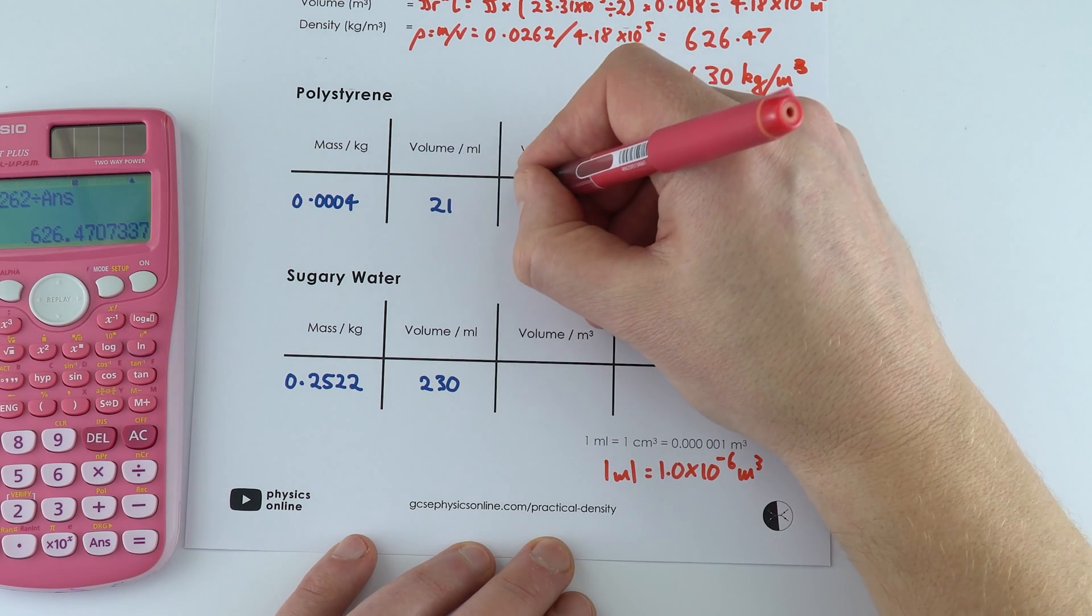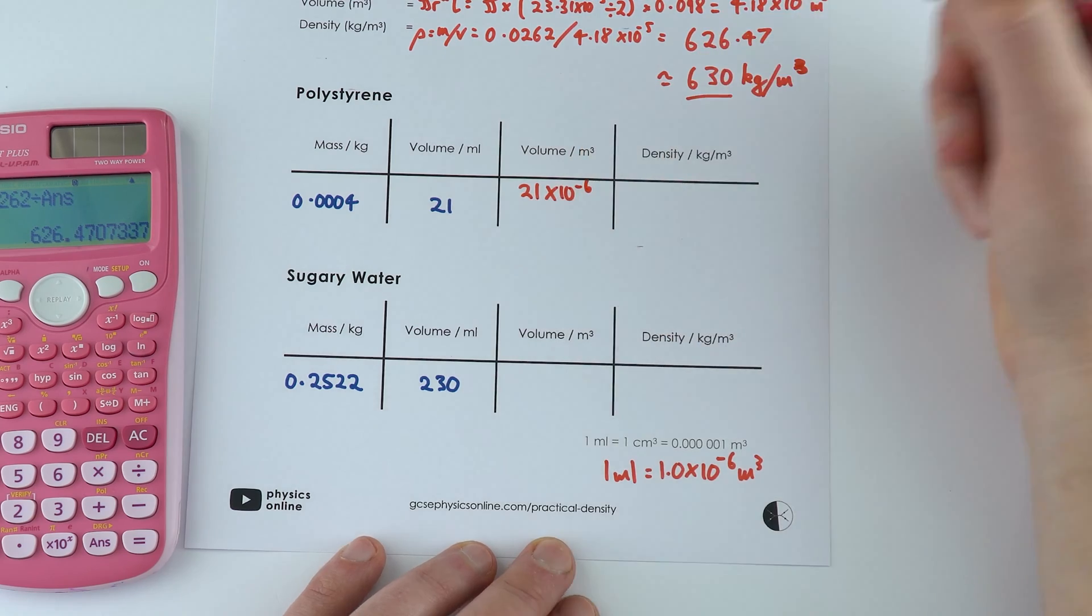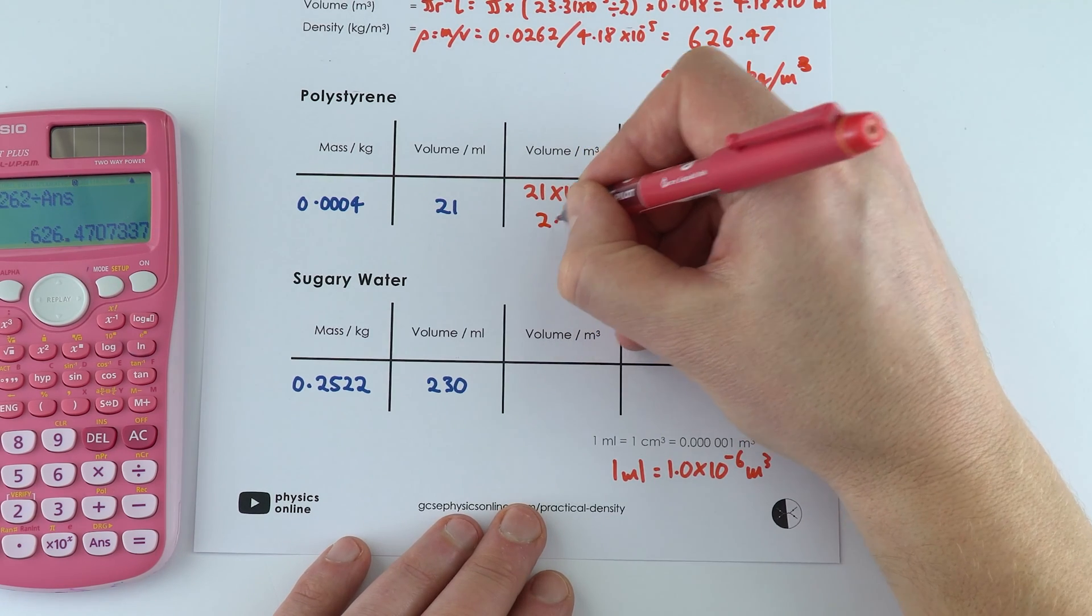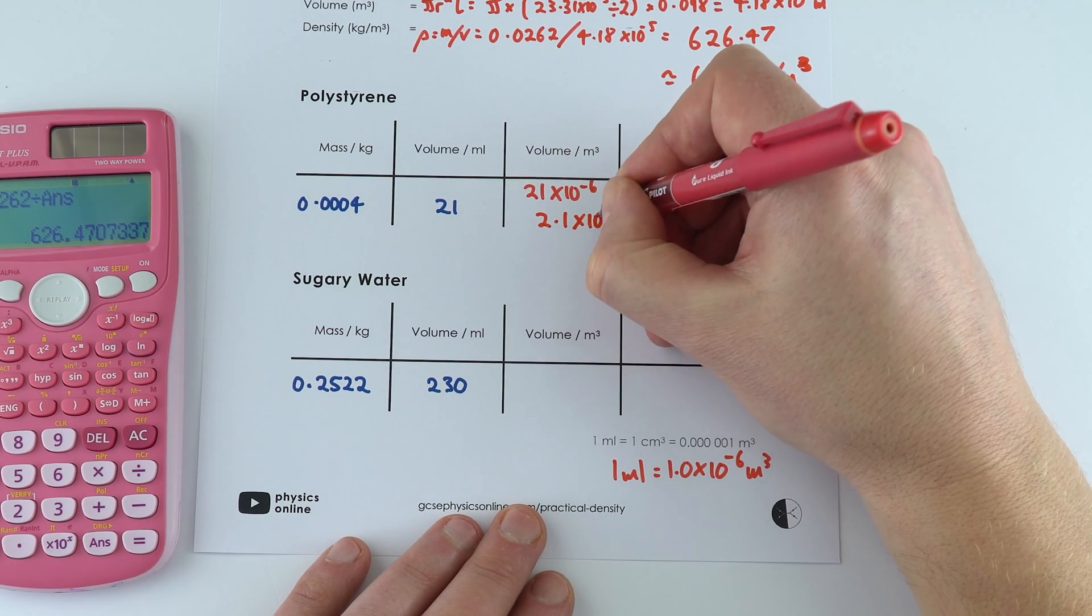So this value here is also 21 times 10 to the minus 6 cubic meters which could also be written as 2.1 times 10 to the minus 5.